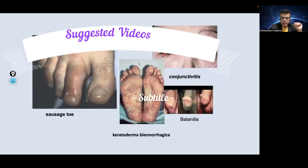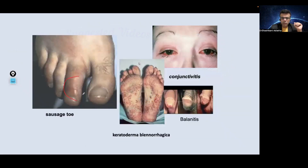There is swelling of the fingers and toes, hemorrhagic and keratotic spots, balanitis, and conjunctivitis. These are the cardinal features of Reiter's syndrome, also known as reactive arthritis.